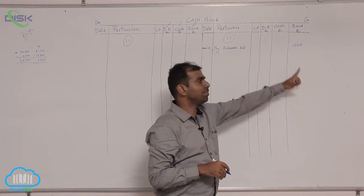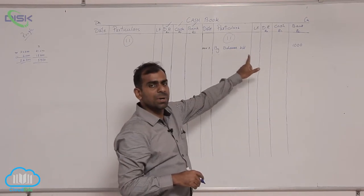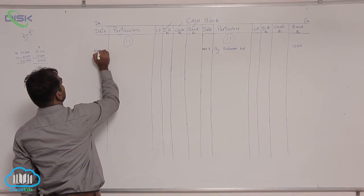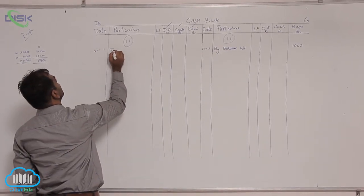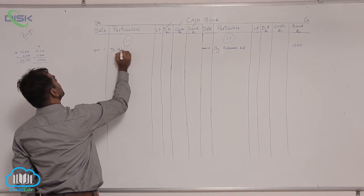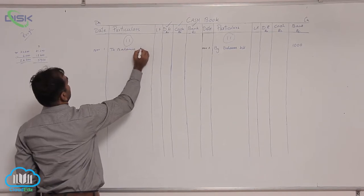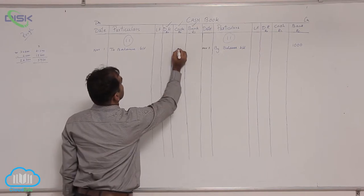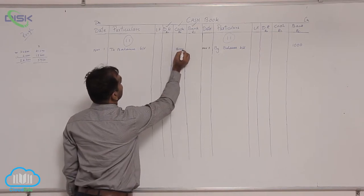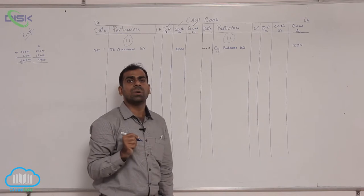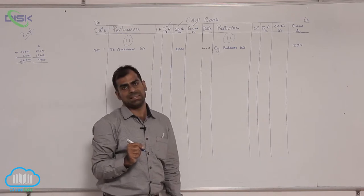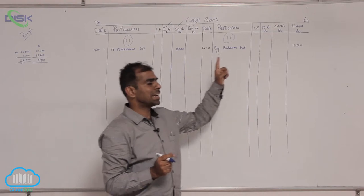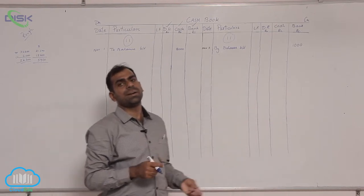On the debit side, write 'to balance brought down' in the cash column with the amount 8,000. This is how you record opening balances — one on the debit side (cash) and the other on the credit side (bank overdraft). Remember: bank overdraft always shows a credit balance.